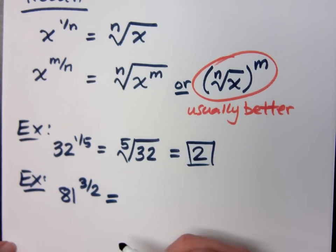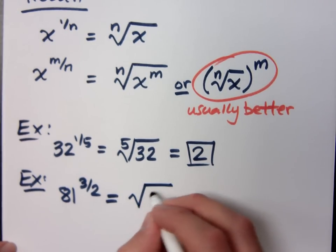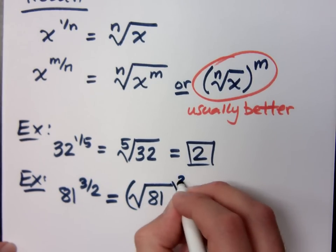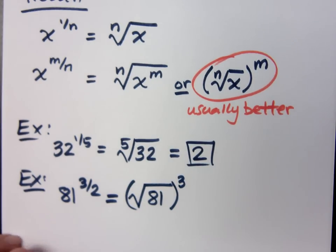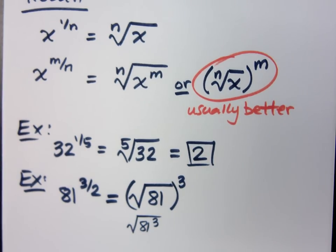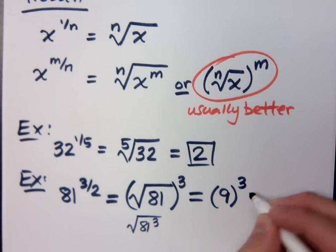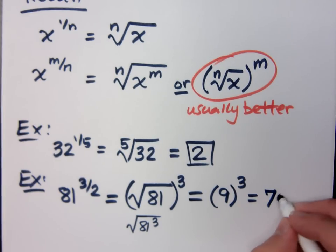So what if I say 81 to the 3 halves power? What's the best way of looking at this? It means I'm talking about the square root of 81, and I raise that to the 3rd power. So I think it's better to do it this way, because do you know the square root of 81? You know that. But what if I had it as that guy? Do you know what 81 to the 3rd power is? No, it's kind of gross. So let's not do that. Instead, I'm going to worry about this guy. So the square root of 81 is 9, and then what's 9 to the 3rd? 729.